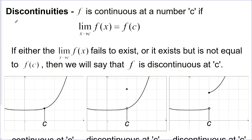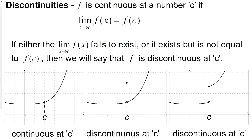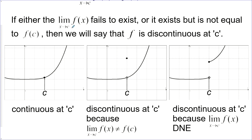Discontinuities. We talked about discontinuities before — in 30-1 we had asymptotes. Vertical asymptotes were discontinuities, and also points of discontinuity. Now we have a definition for what is continuous: function f is continuous at a number c if the limit as x approaches c of that function is equal to the value of the function at c. If the limit fails to exist, or it exists but is not equal to f at c, then we say it is discontinuous.